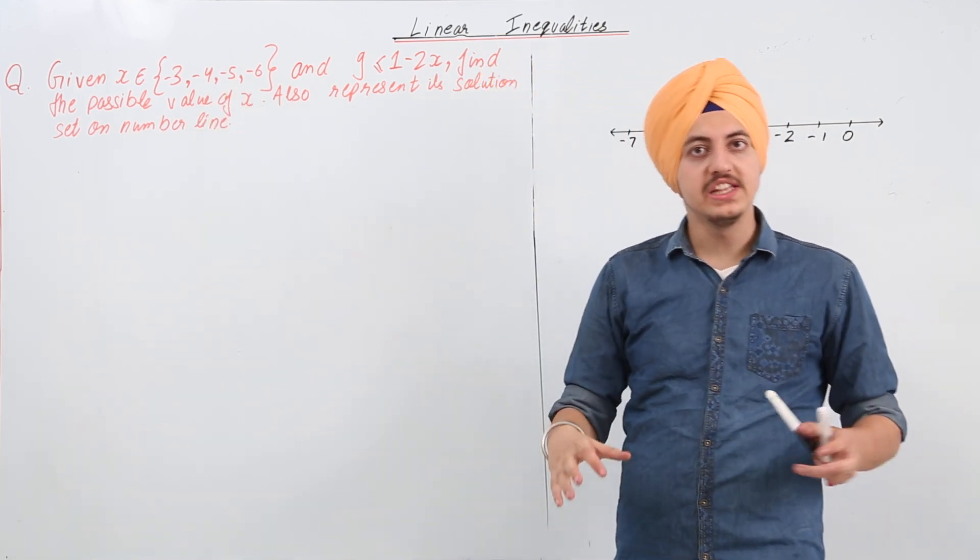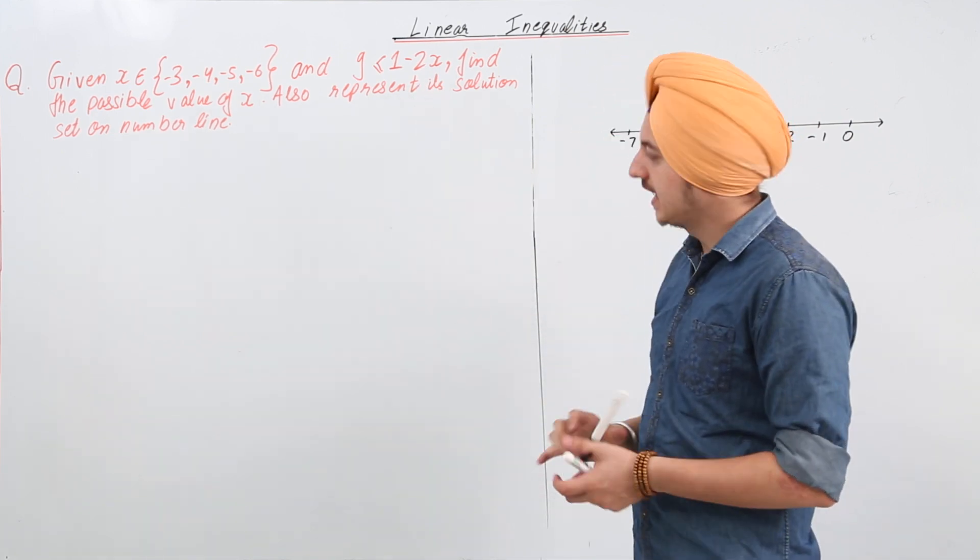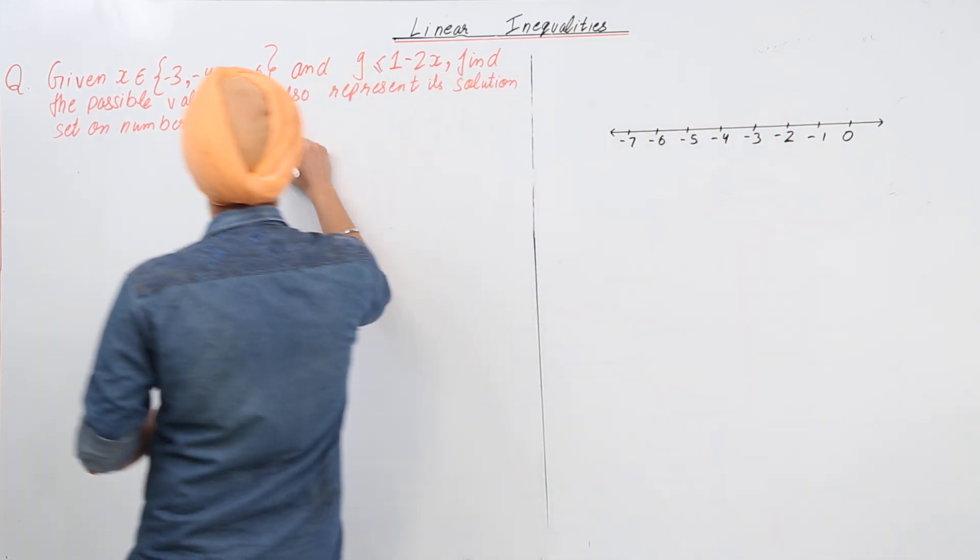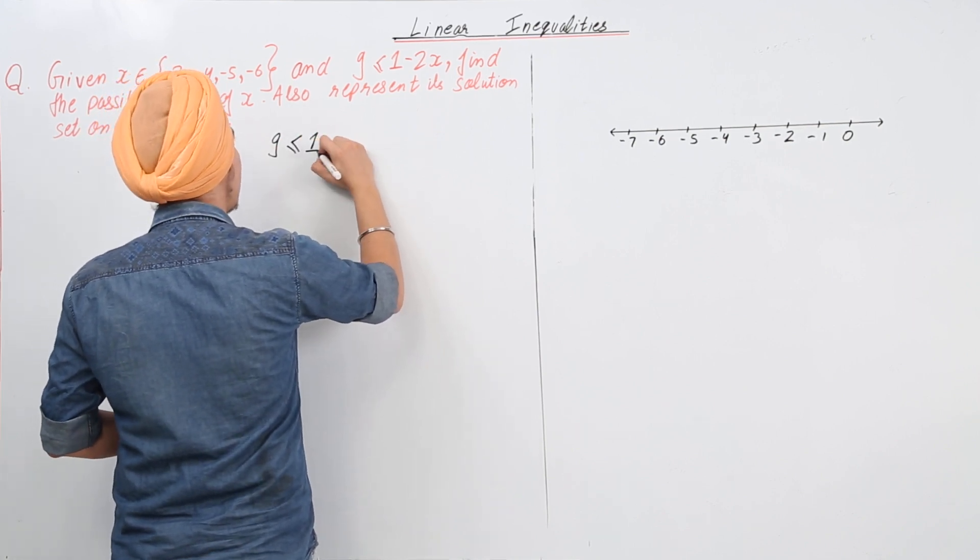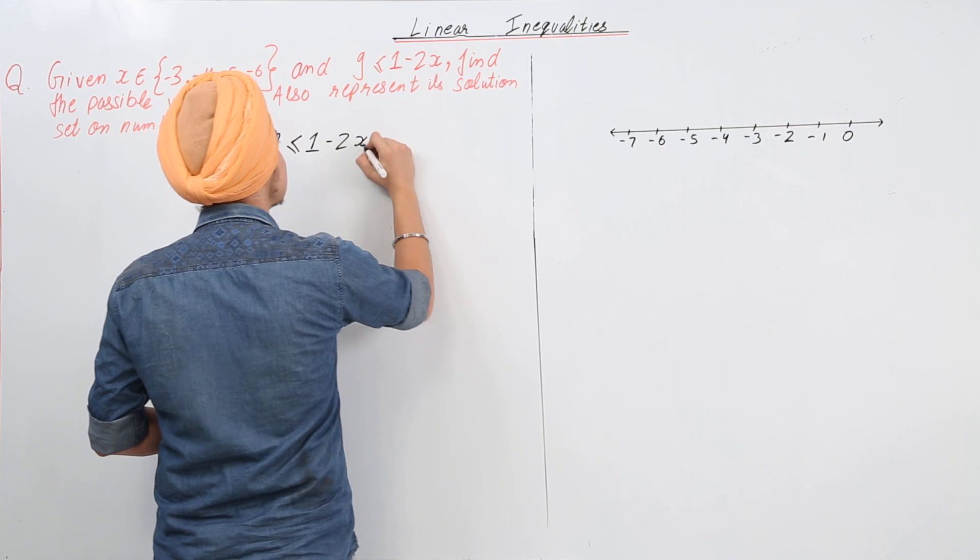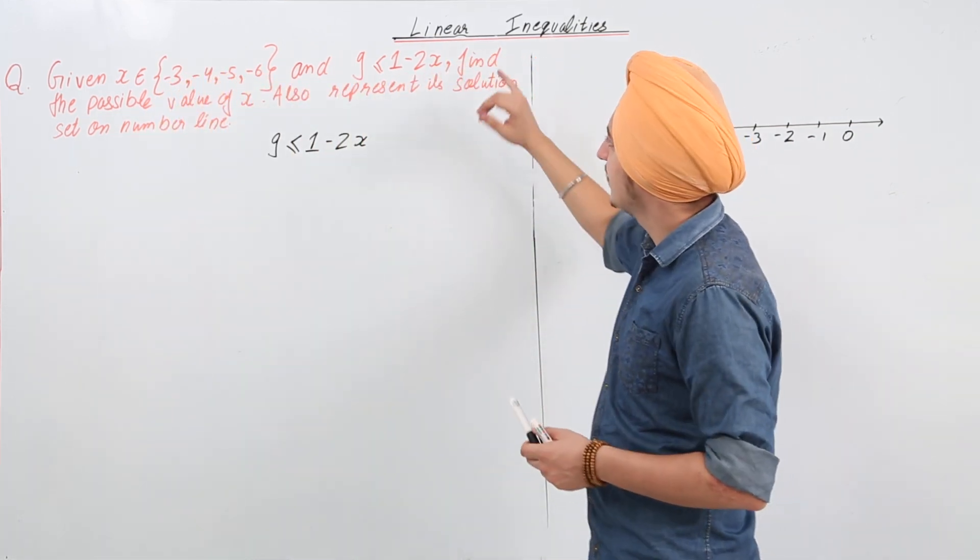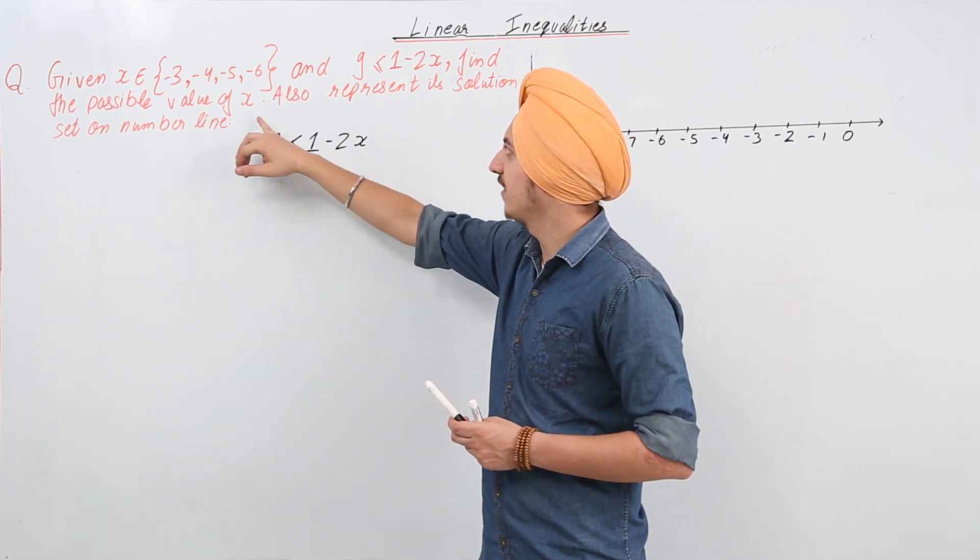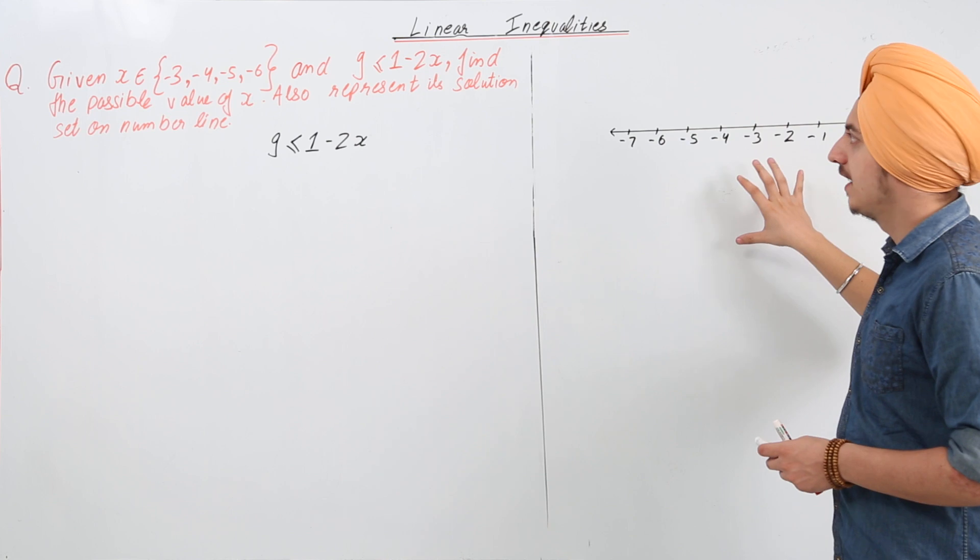So x can have only these four values and we have an inequality which says 9 is less than or equal to 1 minus 2x. This is the inequality and we have to find the possible value of x and also represent them on the number line.